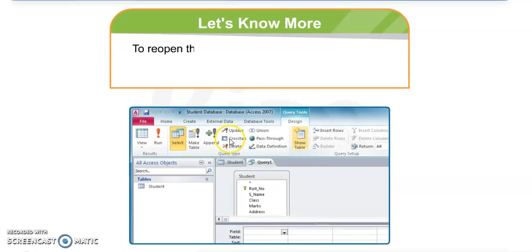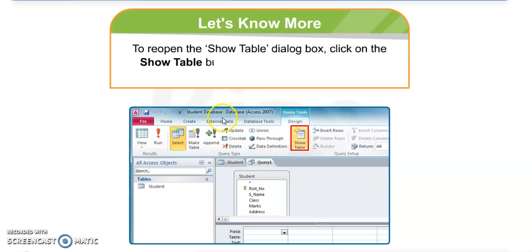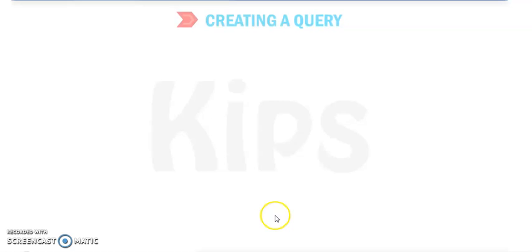It is called Object Relationship Pane. With this pane we can make the relationship between two tables. Now one more point to note: if you want to reopen the Show Table dialog box, click on Show Table button on the Design Query Setup group.